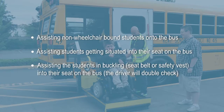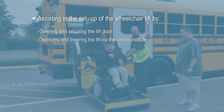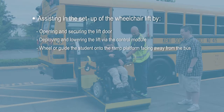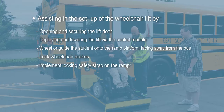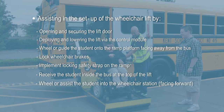Staff may also assist in the setup of the wheelchair lift by opening and securing the lift door, deploying and lowering the lift via the control module, wheeling or guiding the student onto the ramp platform facing away from the bus, locking the wheelchair brakes, implementing the locking safety strap on the ramp, receiving the student inside the bus at the top of the lift when the driver is outside the bus and raising the lift, and wheeling or assisting the student into the wheelchair station facing forward.